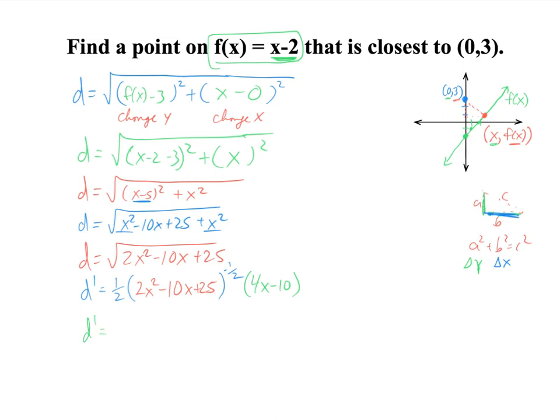d prime is equal to, bring the one-half power out front, drop the power by one, and what goes inside is the same piece. So the 2x squared minus 10x plus 25 stays in the inside. And then we take the derivative of the inside and multiply it, it's a chain rule, we get 4x minus 10. And now we want to simplify this. d prime is equal to 4x minus 10, I'm going to pull a 2 out. That's 2x minus 5, the top. Don't we have the 2 on the bottom still? And don't we have a negative square root on the bottom? Do you see the 2's canceling?